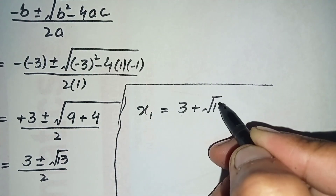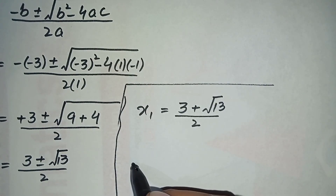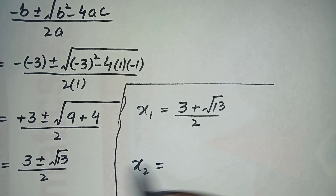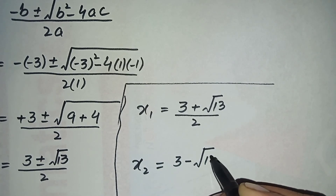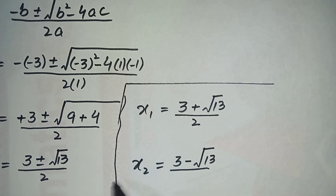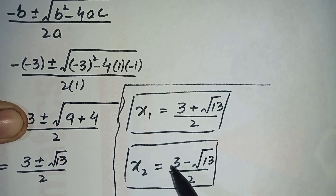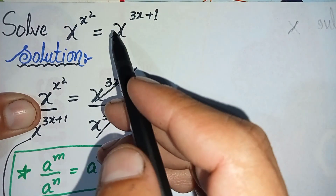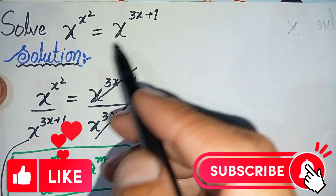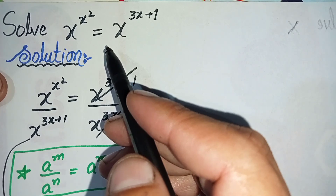So the two solutions are: x₁ equals (3 plus square root of 13) divided by 2, and x₂ equals (3 minus square root of 13) divided by 2. These are the possible solutions of this nice exponential math problem. Don't forget to subscribe to our YouTube channel for more such videos. Thank you so much for watching, take care, see you in the next video, bye bye.